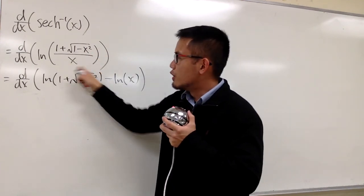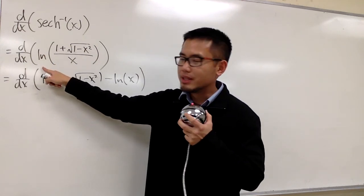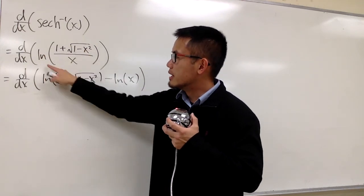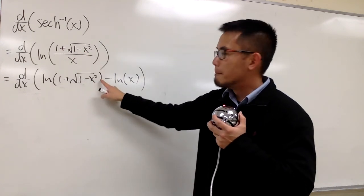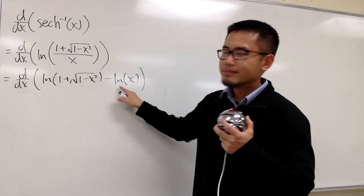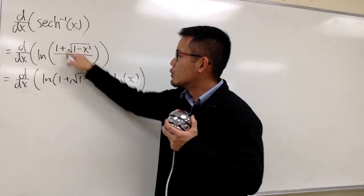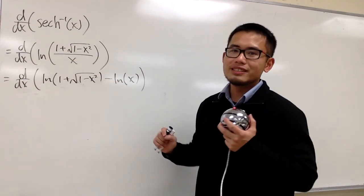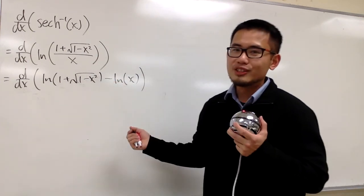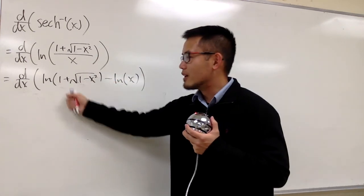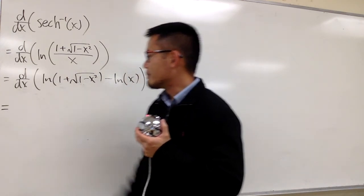However, before we differentiate this, we can use one of the ln properties, because we know this is the same as ln of the top minus another ln of the bottom, because ln of a quotient is a difference of two ln's. Now we can focus on differentiating the first term and then the second term. So let's go ahead and do our calculus now.